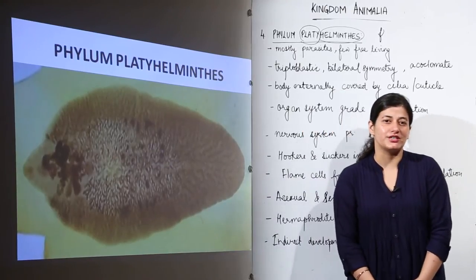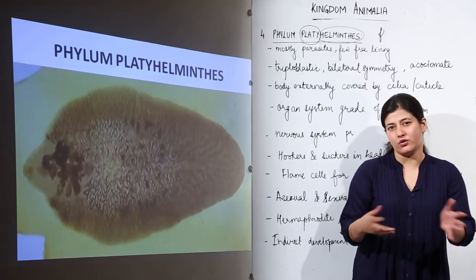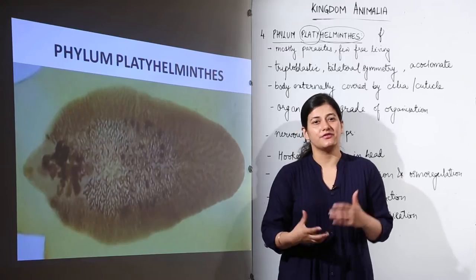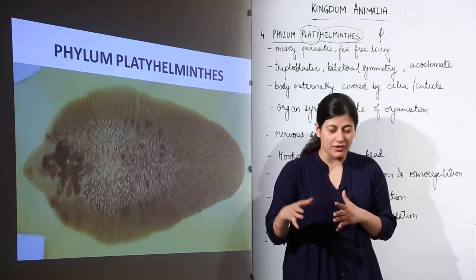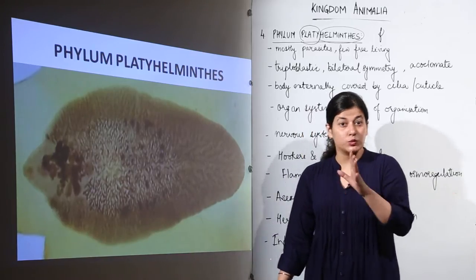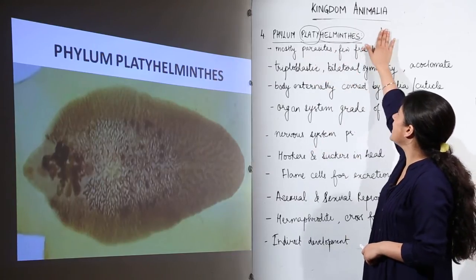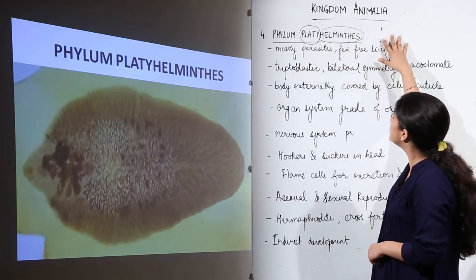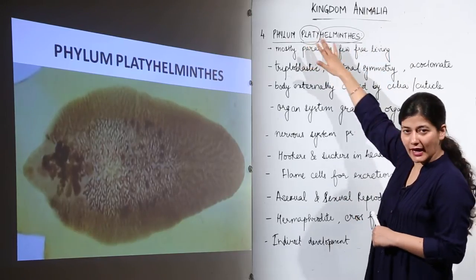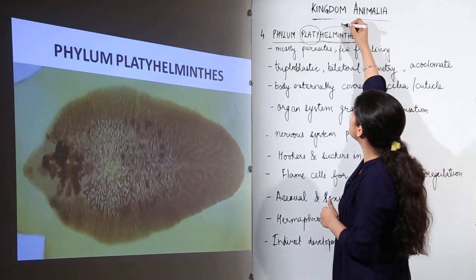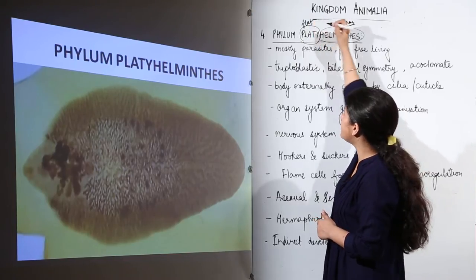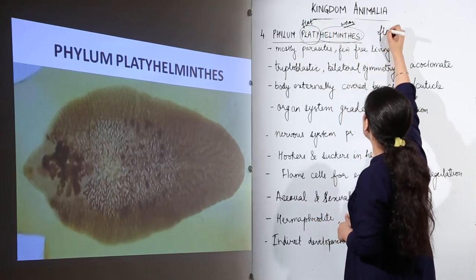From sponges to jellyfish to corals and comb jellies, we have now come to the worms. The next two phyla we study after this will also contain worms. Now let us see the first worm phylum we are going to study. We are going to break the word 'Platyhelminthes' into two parts: 'platy' and 'helminth.' Helminth refers to worms, and platy means flat. So this phylum is all about flatworms.